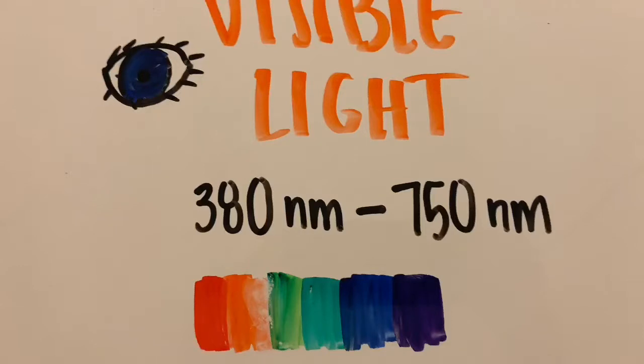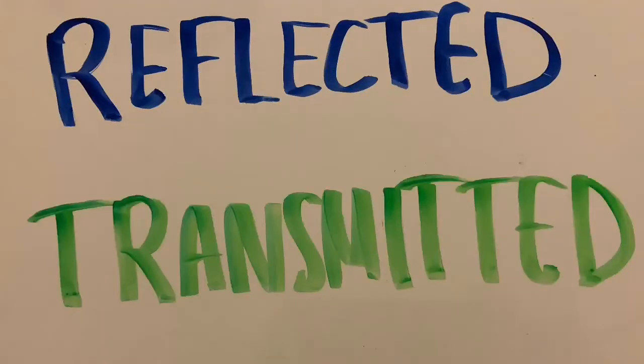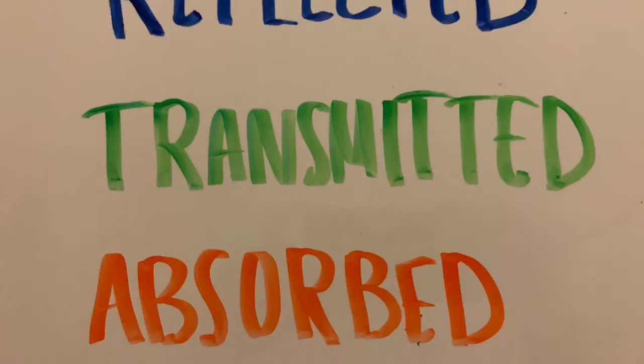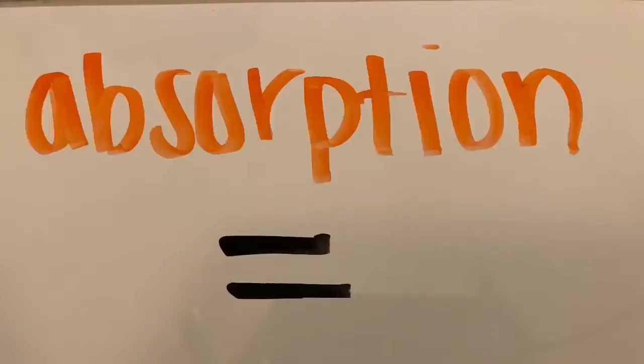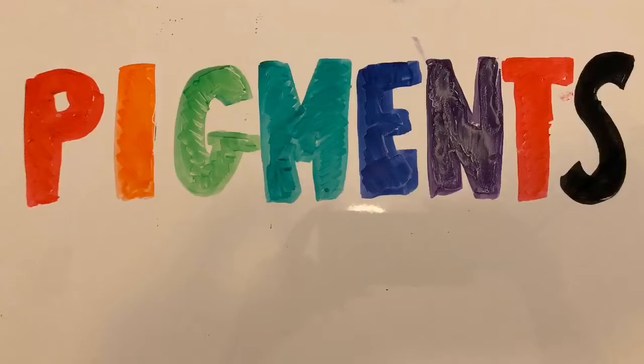As light meets matter, it is either reflected, transmitted, or absorbed. The substances responsible for the absorption of visible light are called pigments.